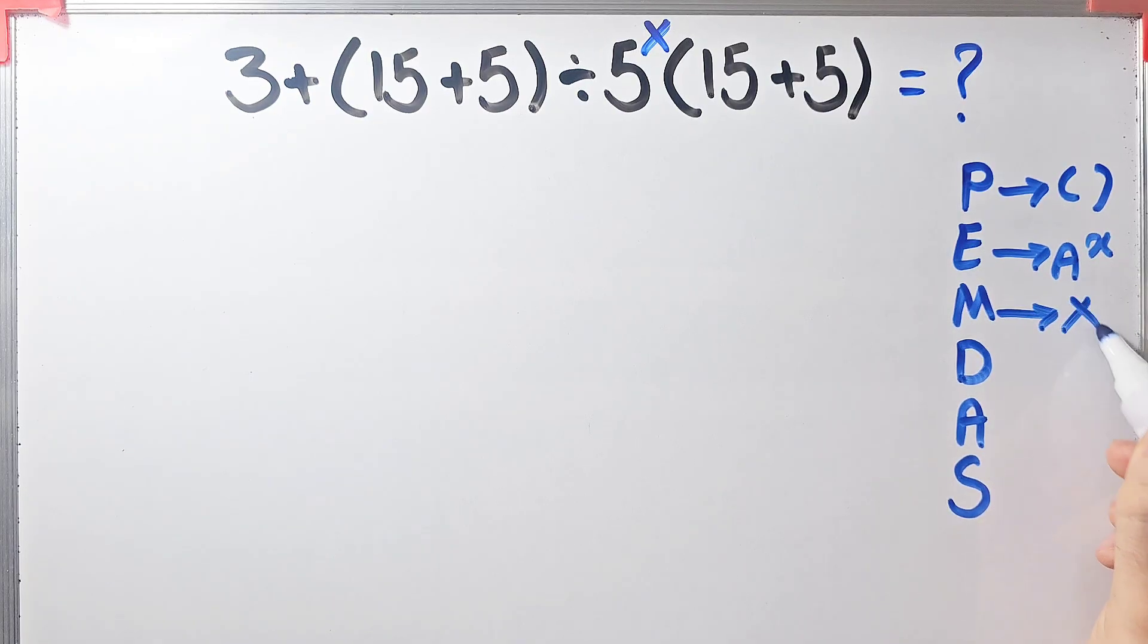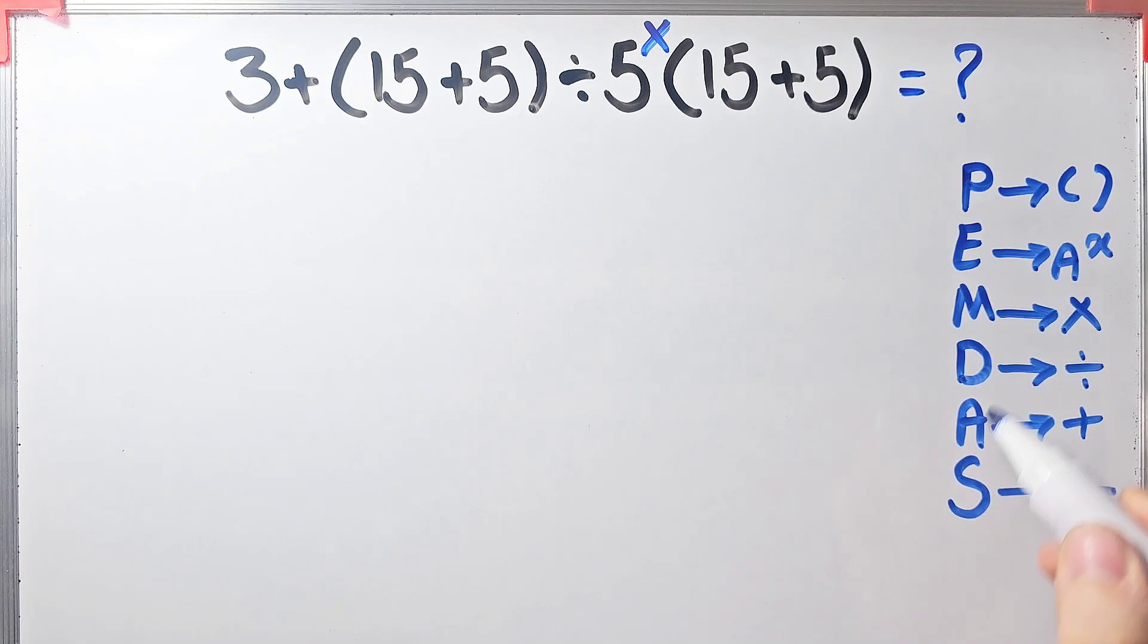M stands for multiplication, D stands for division, A stands for addition, and S stands for subtraction. Multiplication and division have the same level of priority. Also, addition and subtraction have the same level of priority.